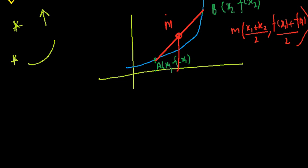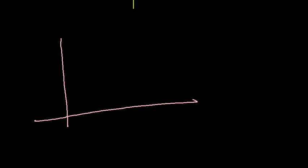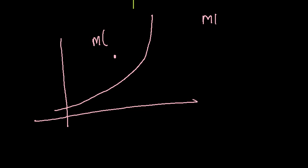Because the function is increasing and concave upward, we have the conclusion that the function is concave upward. The point has coordinates x-coordinate (x1+x2)/2 and y-coordinate (f(x1)+f(x2))/2. This point lies on the curve.